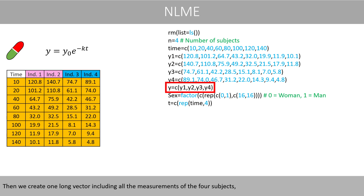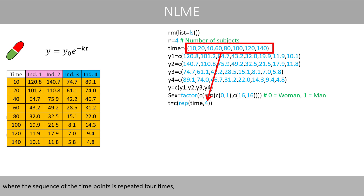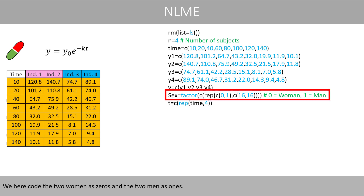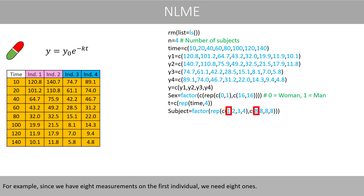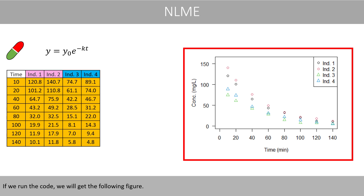Then we create one long vector including all the measurements of the four subjects, and a corresponding vector for the time points where the sequence of the time points is repeated four times so that these two vectors have the same length. We here code the two women as zeros and the two men as ones. Then we need one vector that defines the subjects — since we have eight measurements on the first individual, we need eight ones, and since we have eight measurements on the second individual, we need eight twos, and so forth. Then we create a data frame and plot the data. If we run the code, we'll get the following figure.